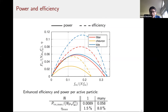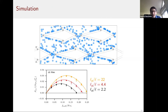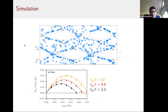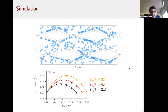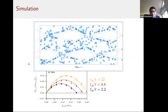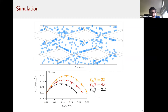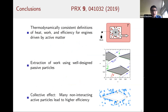This was a purely theoretical prediction based on the mean-field approach, and we confirmed it numerically with simulations performed by Étienne Fodor — simulating active particles interacting with kite-shaped obstacles. The simulations confirmed the collective effect and also showed that increasing the persistence length of the active particles increases the output power of the machine.